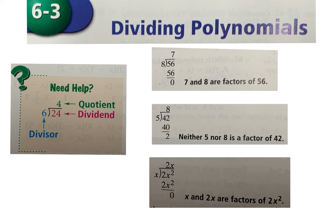The number you are dividing is the dividend, what you're dividing by is the divisor, and the answer is the quotient. You look at the dividend and ask how many times does the divisor go into it — in this case, four times.